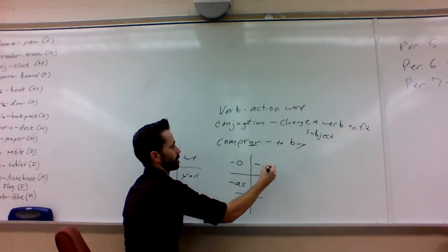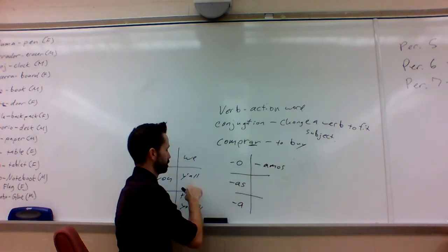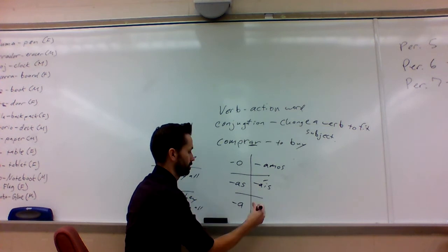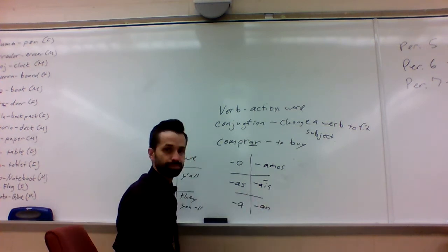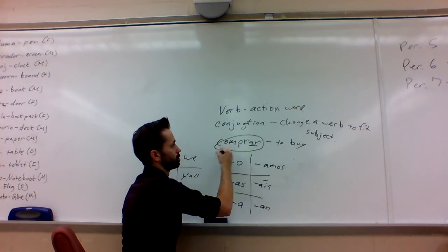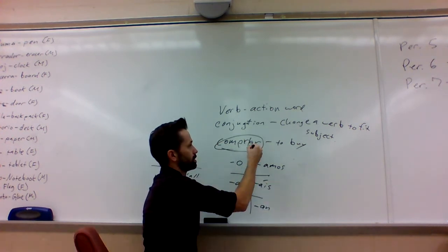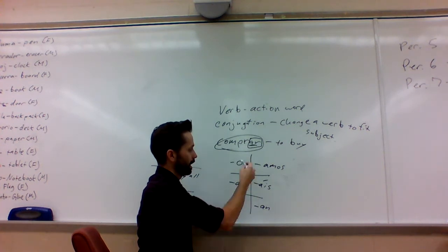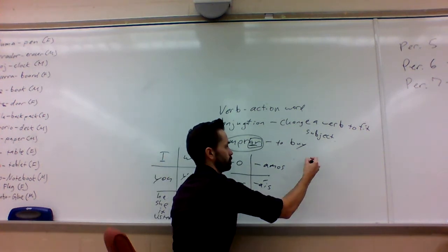We would go with amos, y'all goes with áis. This does have an accent on the A. And an. So the process you go to take this 'to buy,' to be able to change it, you're gonna take off these last two letters, this AR, and add one of these. So if I do that, for example...